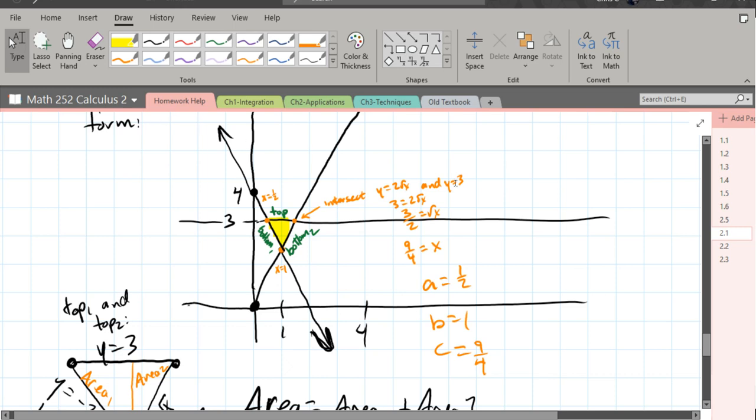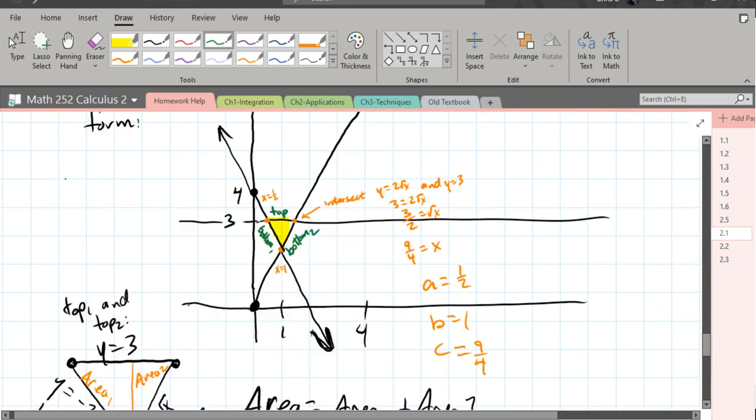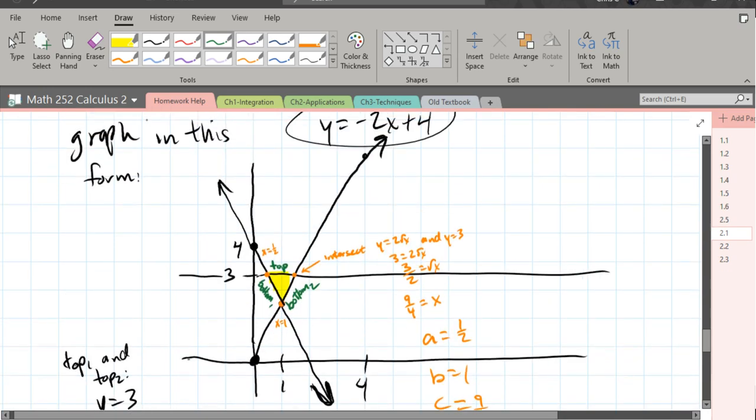Then I graphed them. How did I graph them? The y equals 3 function is super easy. Horizontal line, boom. The other line has a y-intercept of 4 and a slope of negative 2, boom, right there.